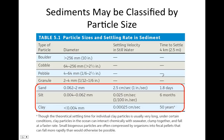One way we classify sediment is by particle size. We have a table of different types of particles from biggest to smallest: boulders, cobbles, pebbles, granules, sand, silt, and clay. Sand, silt, and clay are highlighted because these are the three most common types of particles found on the ocean floor.